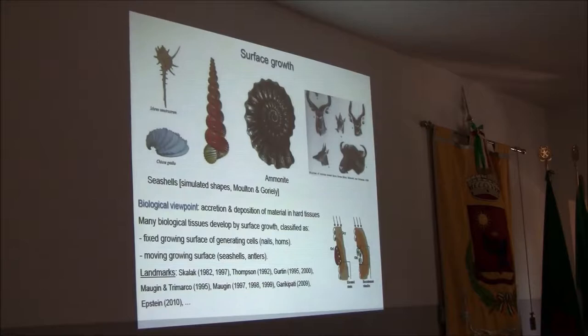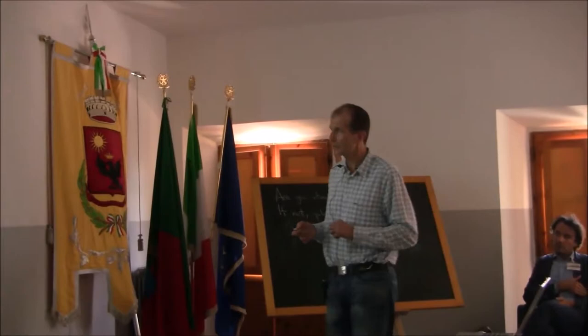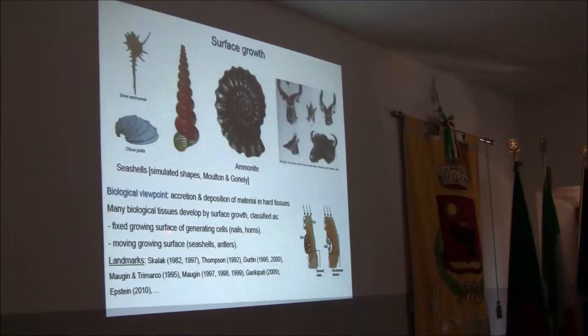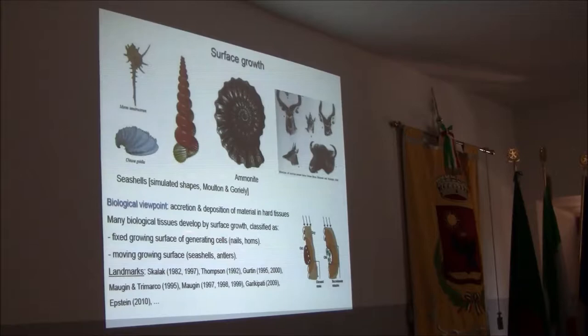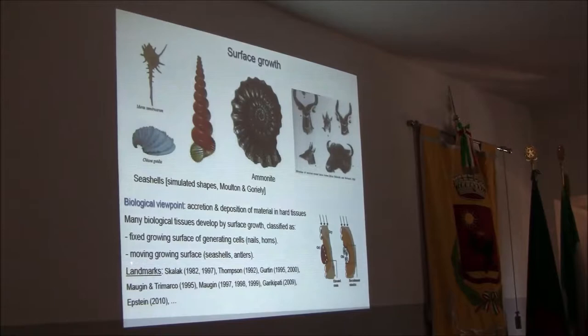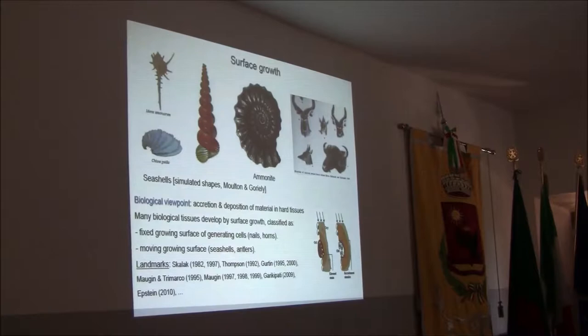From a biological viewpoint, surface growth describes accretion and deposition of materials — hydroxyapatite for bone, in hard tissues. It is known that soft tissues are more prone to volumetric growth, whereas hard tissues mostly grow by a surface mechanism. There is a second classification: either a fixed growing surface of so-called generating cells that produce new material — as for nails or horns — or a more general situation of moving growing surfaces, as for seashells or antlers.